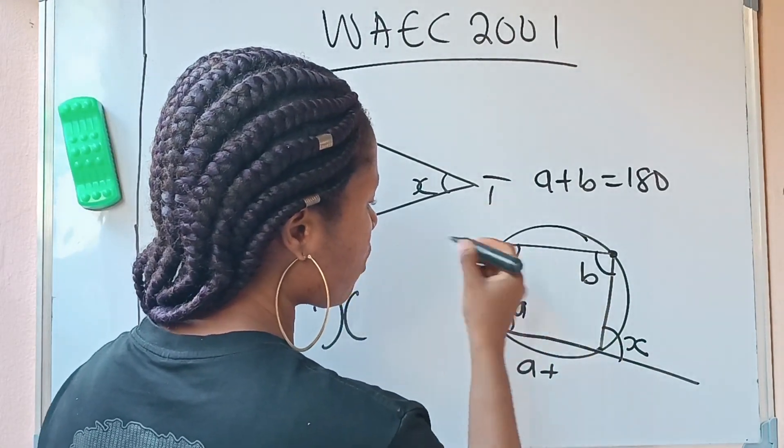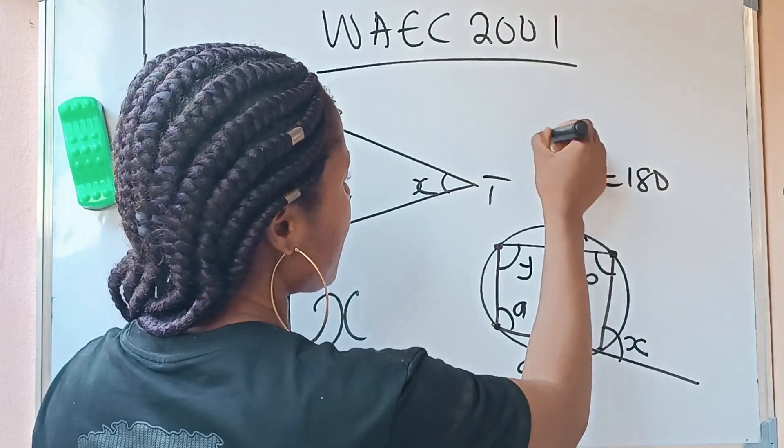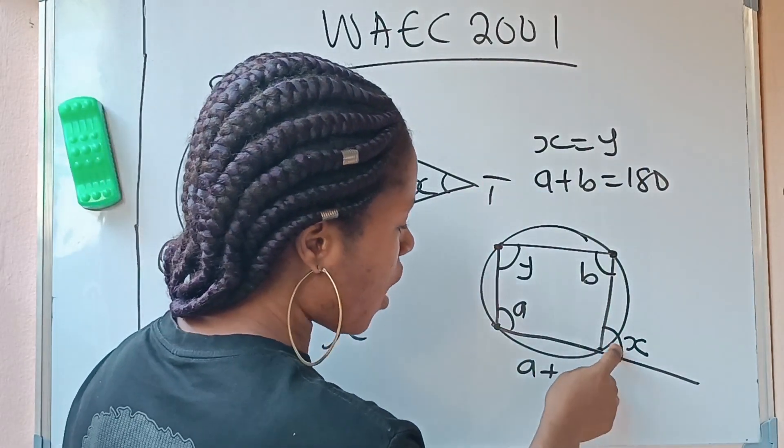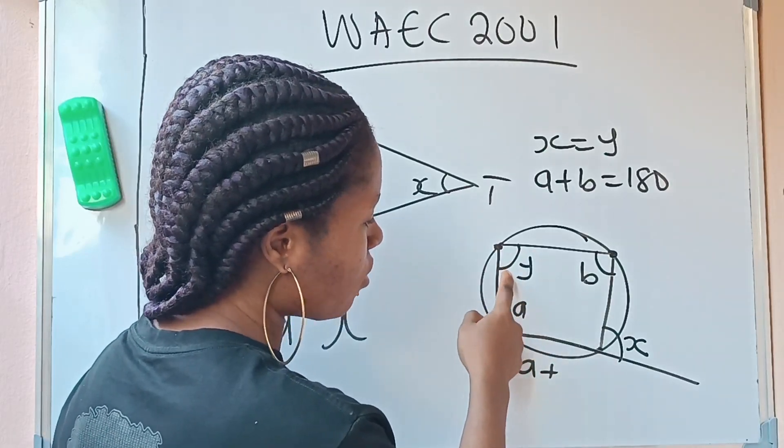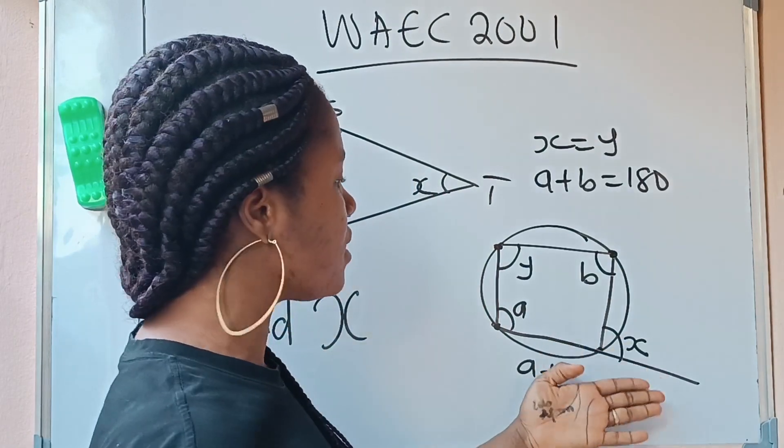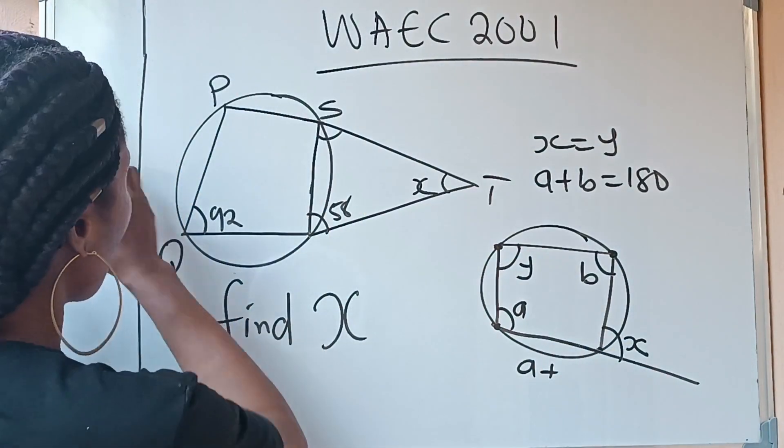it says that it is equal to the opposite interior angle. This is opposite interior angle. Let's call it Y. So it says that X is equal to Y. Do you understand? This is exterior angle. Then this is opposite interior angle. The both of them are equal. So just see how I'm going to apply this now to what we have on the board.